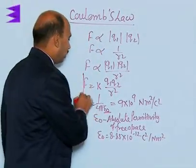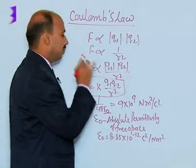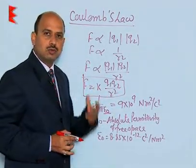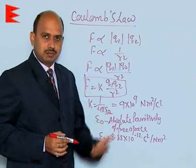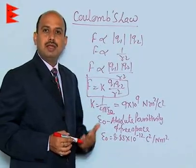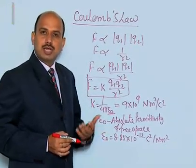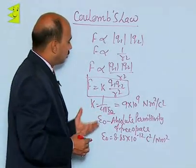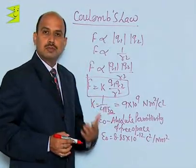This is the electrostatic force acting between two point charges. This force can be attractive as well as repulsive depending on the sign of the charges. This is the scalar form of Coulomb's law.